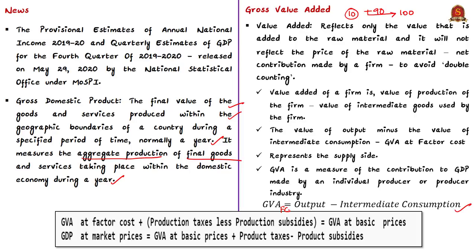In addition to factors of production, the firm also uses government services for which it pays production taxes such as land revenue, license fee, stamp duty, registration fees, and profession tax. At the same time, enterprises receive production subsidies from the government — like subsidies to railways, input subsidies to farmers, and subsidies to small industries. If we add production taxes and subtract production subsidies from GVA at factor cost, we get GVA at basic prices. The formula is: GVA at basic prices = output − intermediate consumption + production taxes − production subsidies.